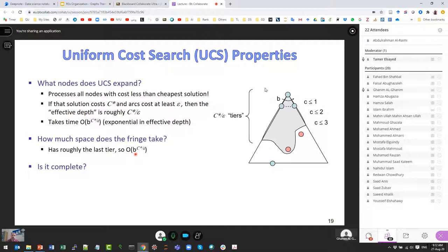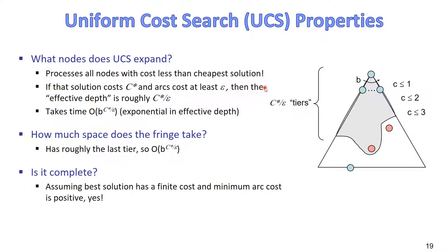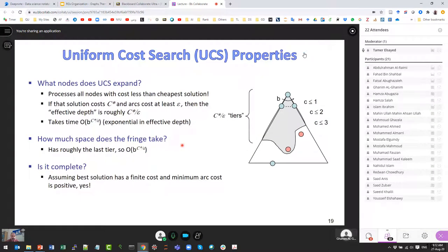For completeness to hold, we assume that the solution has finite cost, and also that the cost of every step is positive. In some special problem cases the cost might not be positive, but with positive step costs the algorithm will find a solution.